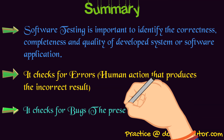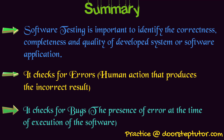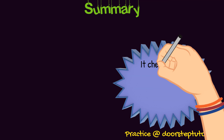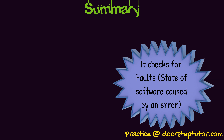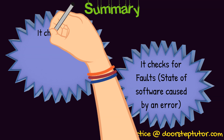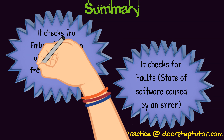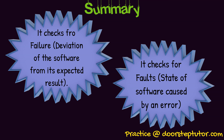Bugs means that the software produces an error during execution of instructions. A fault is the state of software caused by some kind of error. If errors occur in the software, it will result in a fault. Finally, failure is the deviation of the software from its expected result — when the software creates something out of context, the software is said to have failed. These are important distinctions.